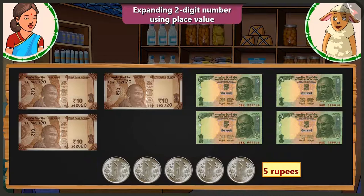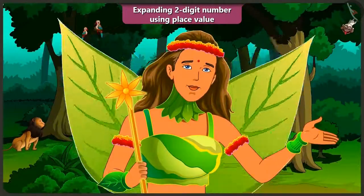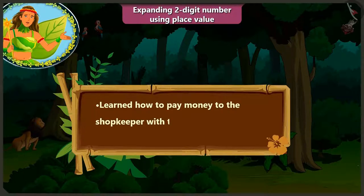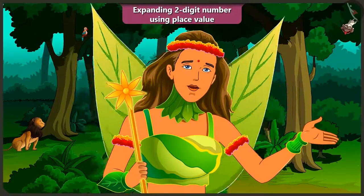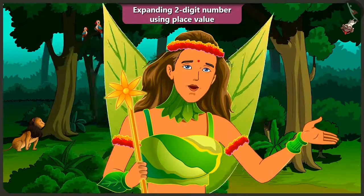Absolutely right, Lily. So Aunty, take these 5 rupees. Thank you, Lily. Children, today after doing some shopping, we have learned how to make payment to the shopkeeper with the help of notes and coins. In the next video, we will learn to add numbers to a group.